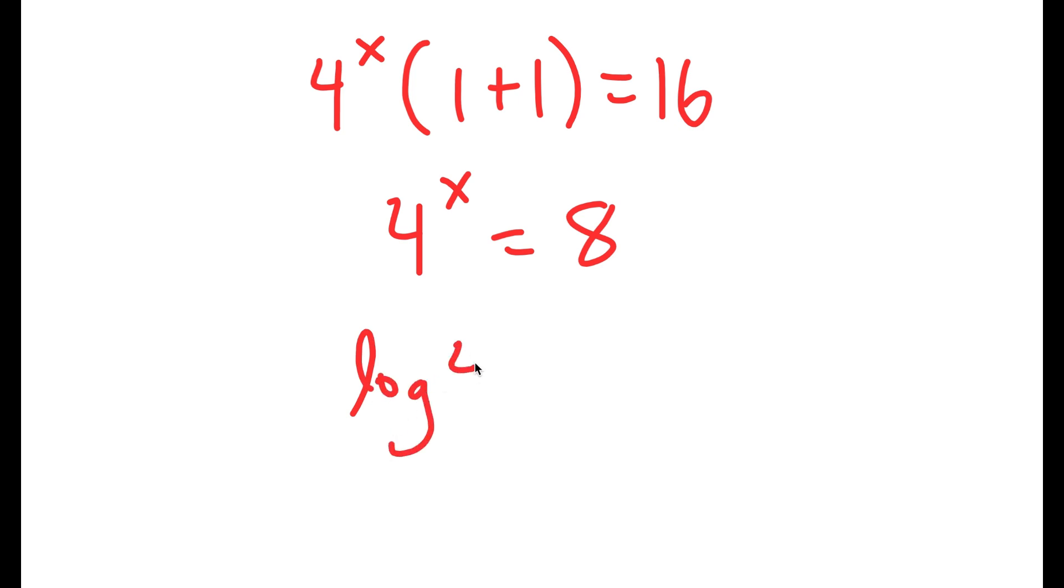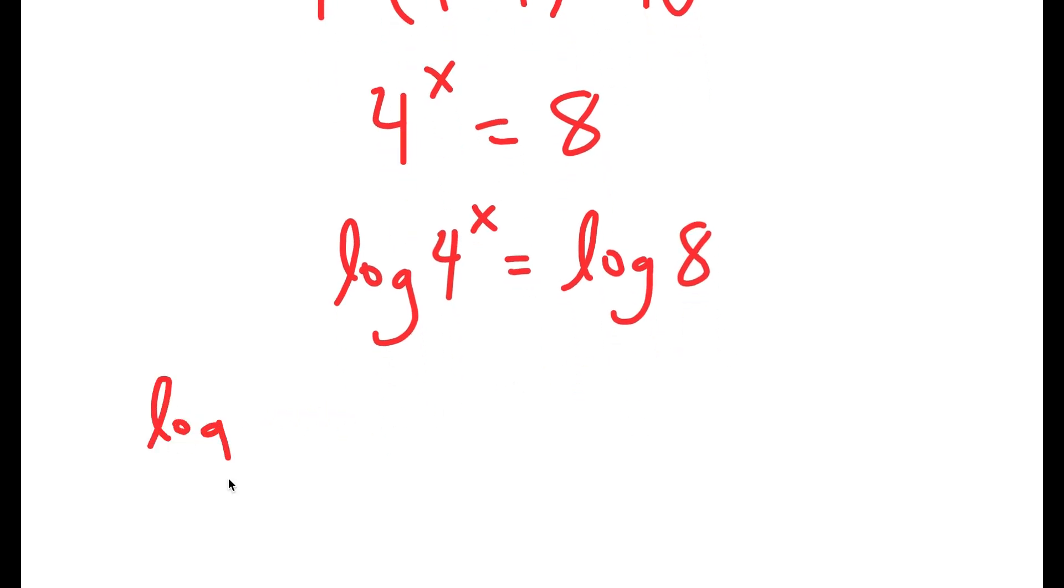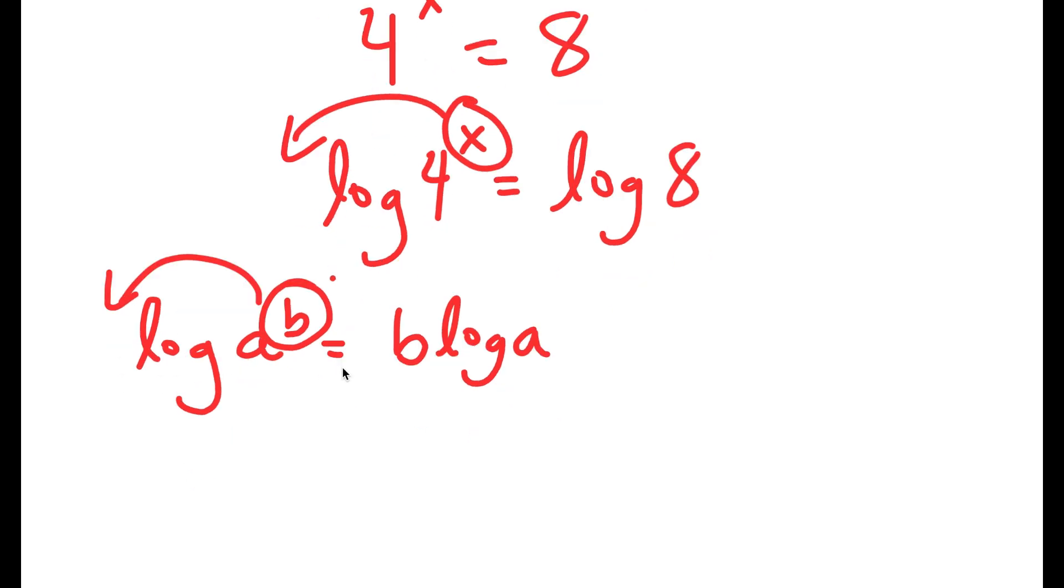And now from here, I'm going to take the log on both sides. So I get log 4 to the power of x is equal to log 8. And if I have something in the form log a to the power of b, I can move this exponent b to the front. So this turns out to b times log a. So I can move x to the front. So I get x times log 4 is equal to log 8.